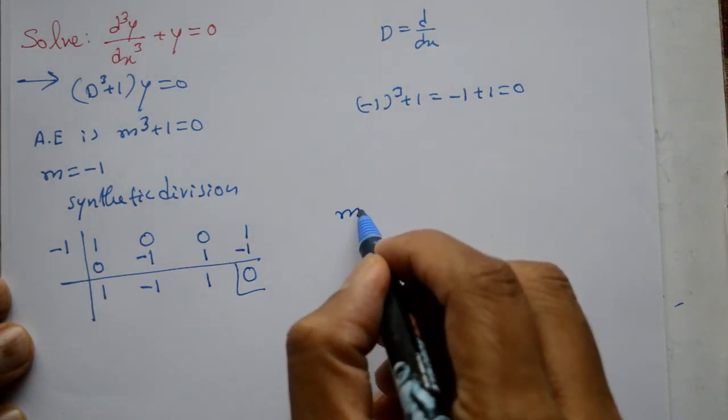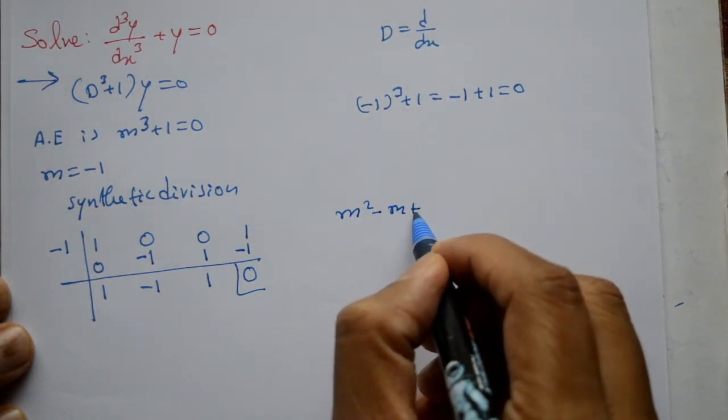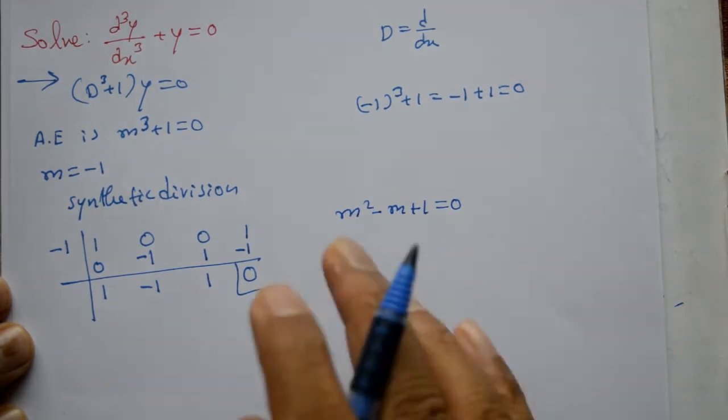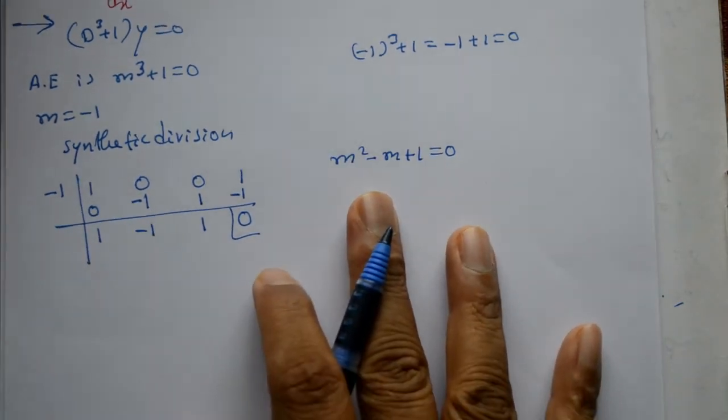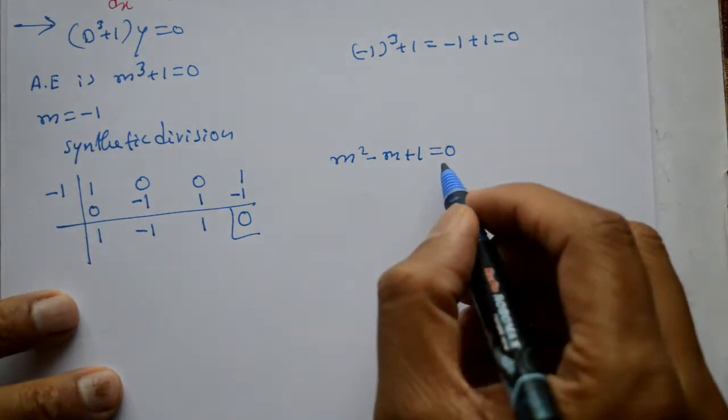Isko equation form me likhayenge haum. So, equation is this therah aayega. m² - m + 1 = 0. Equation form me aayega. Eek quadratic equation ho gaya. Baad me, haum two roots finite karna hai. Aapko quadratic equation pata hai ho ga.